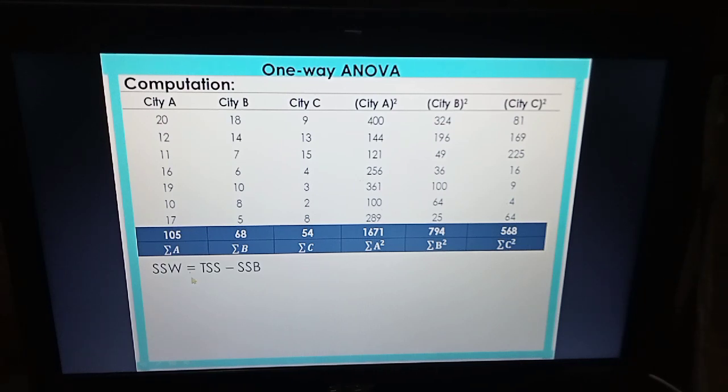SSW is obtained by TSS minus SSB. These two we obtained earlier. Just plug it in here: 579 minus 198. SSW is 380.